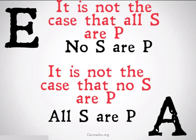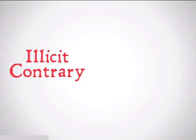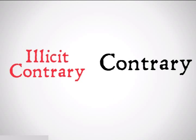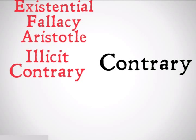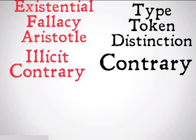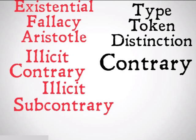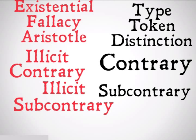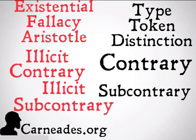They just can't both be true. That was illicit contrary. Yesterday was the existential fallacy, Aristotle, and the type-token distinction. Tomorrow is going to be the illicit subcontrary and subcontrary. Watch a new video every single day for 100 days here at carneades.org, and stay skeptical, everybody.